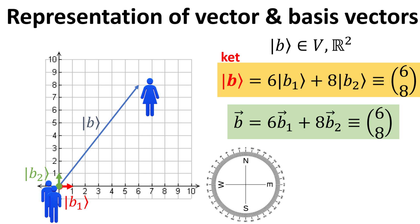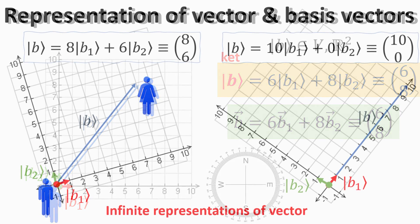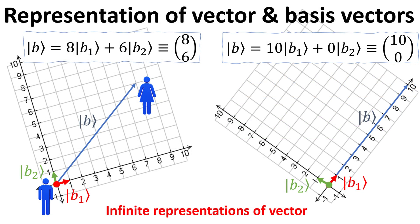Hence, the coordinates of Alice's location relative to Bob would be the two-dimensional column vector with elements 6 and 8. We can also write it in its more familiar equivalent vector notation form as shown in the green box. However, Bob could have chosen a different basis set b1 and b2. In the representation on the left, the basis vectors b1 and b2 are now rotated anticlockwise by about 16.2 degrees relative to the previous basis vectors. In this new representation, the vector b-ket has column elements 8 and 6 instead.